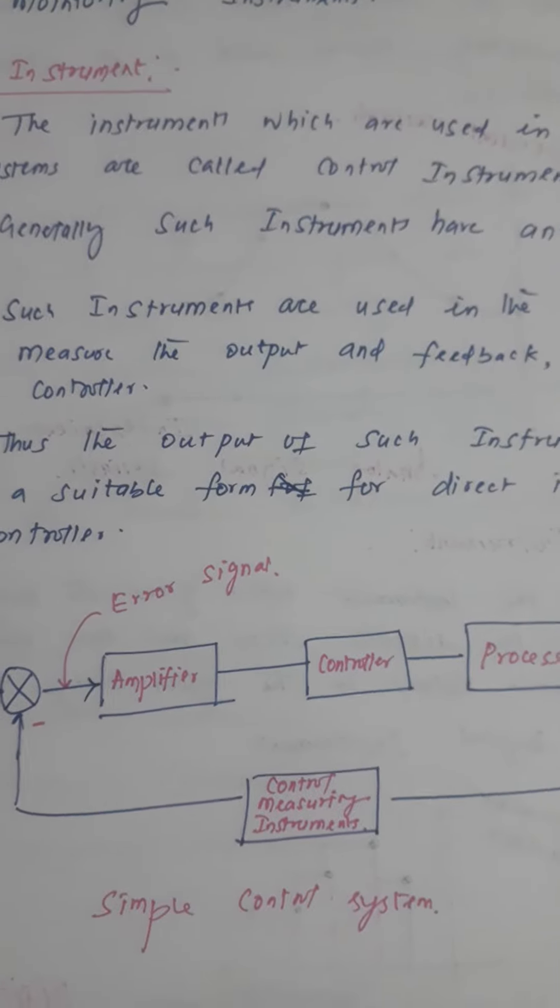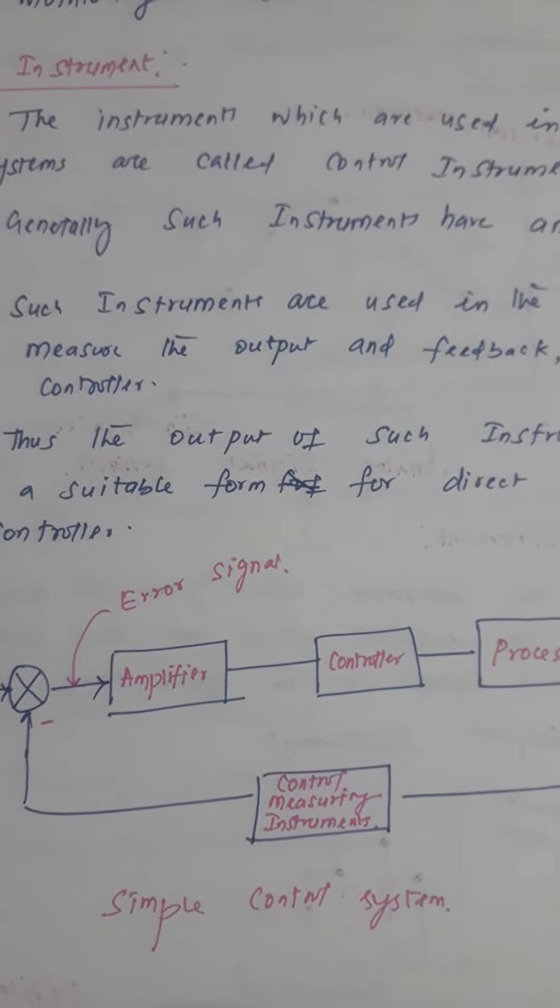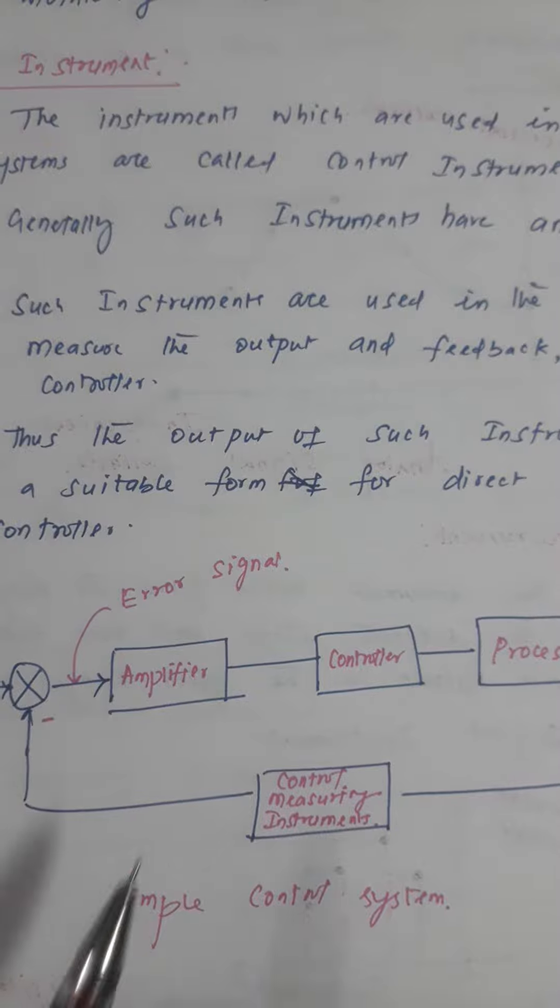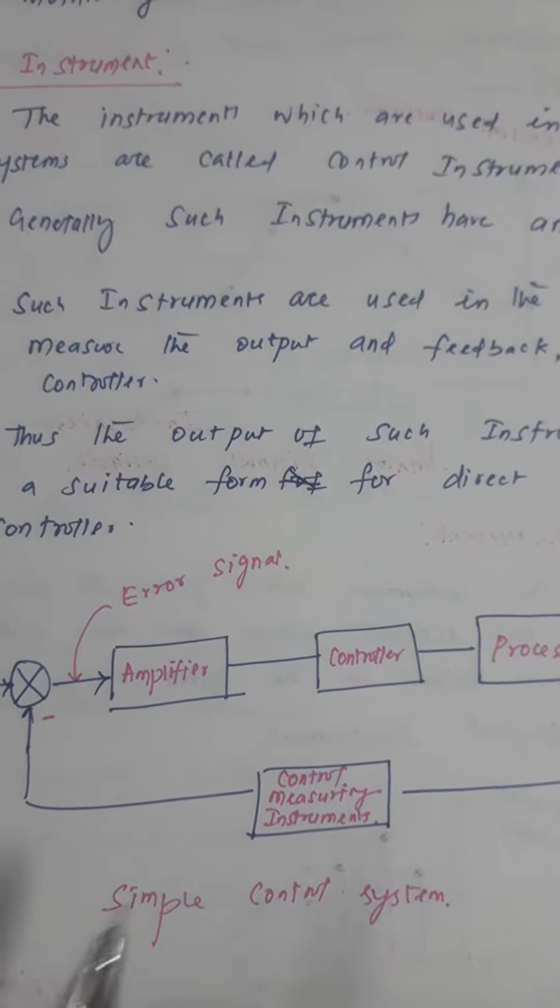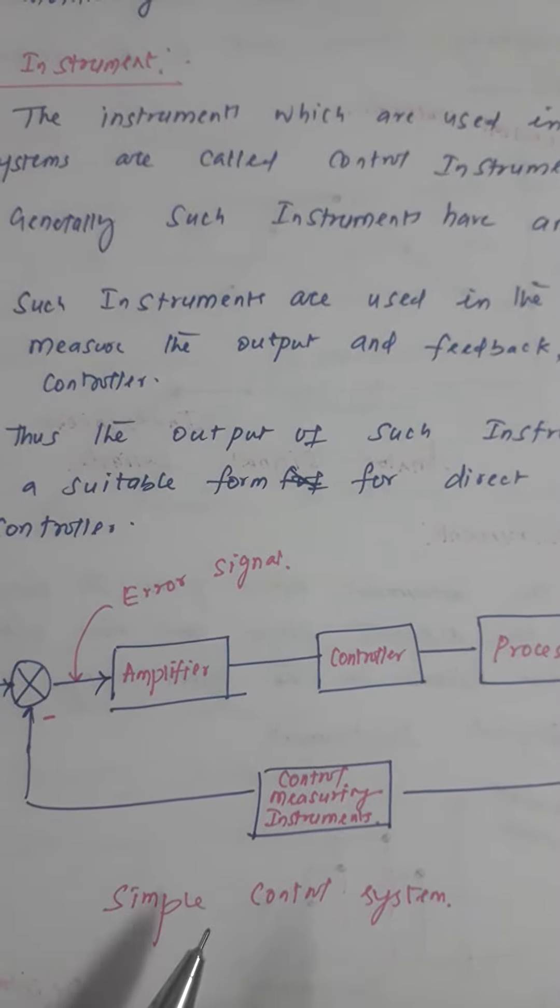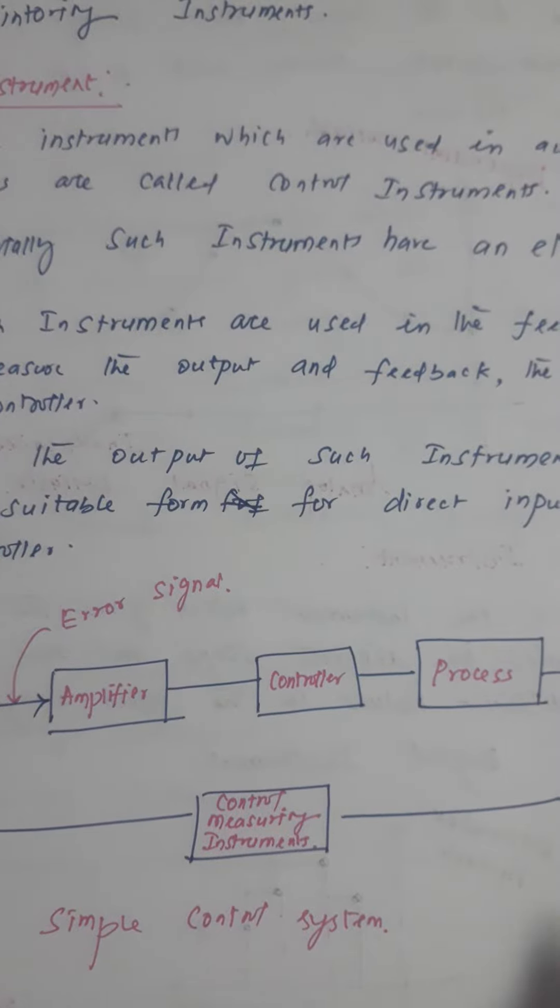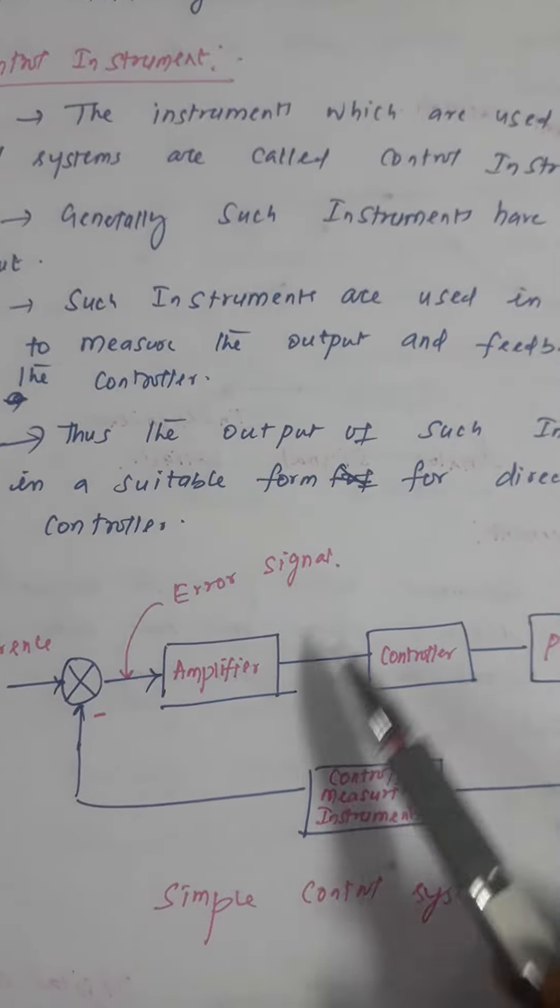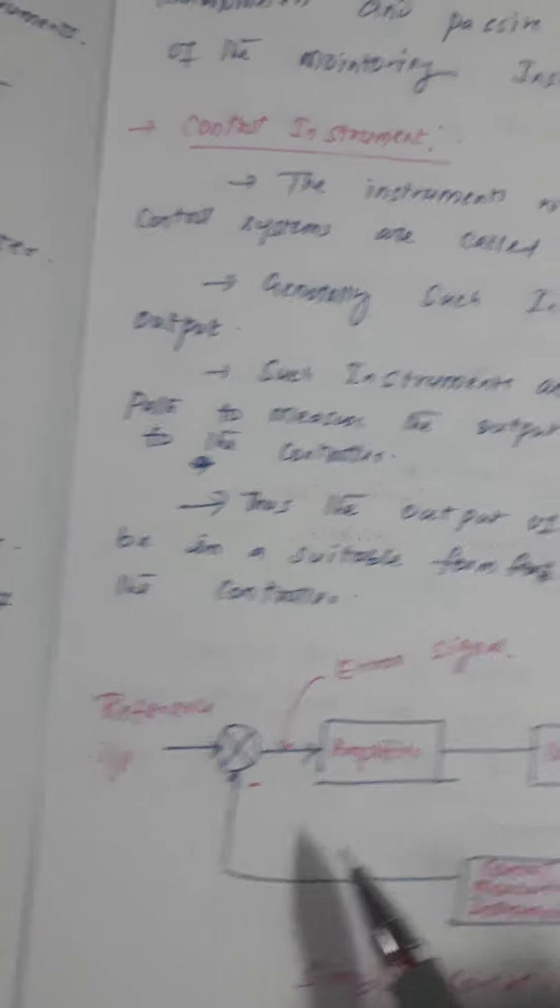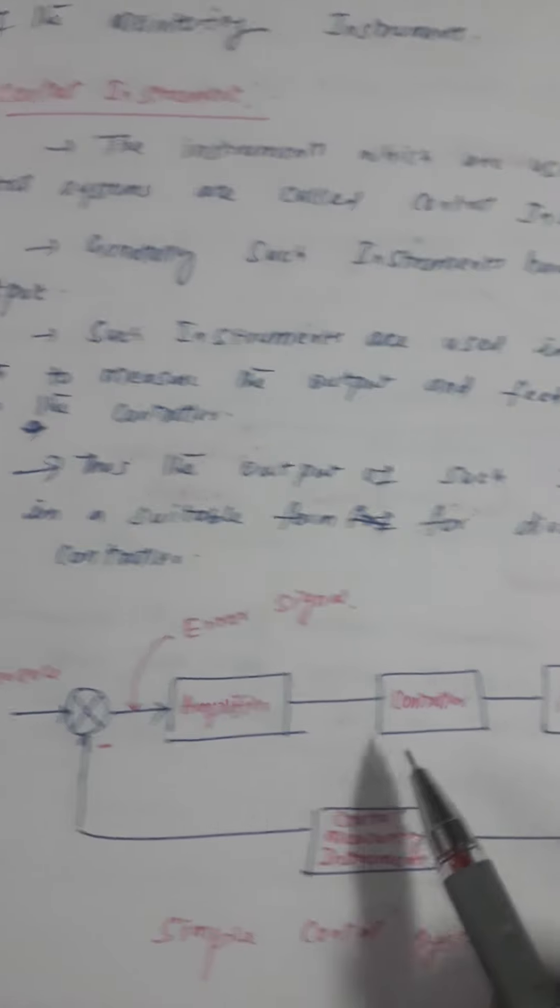In your room you're going to keep some 35 degrees centigrade. If the temperature is going to raise or go beyond that, the output is given back. The output is given back and it is given to the input and it is amplified and again given to the controller.